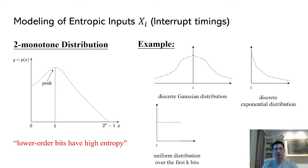These three natural distributions are often used to model interrupt timings. The simplest two-monotone distribution is the uniform distribution over the first k bits, where k least significant bits are uniformly random and the remaining n minus k bits are fixed. It's obvious to see that this distribution has most of its entropy in the lower-order bits.